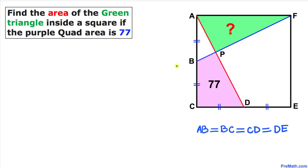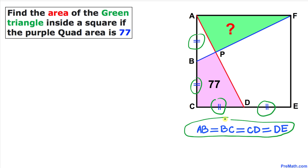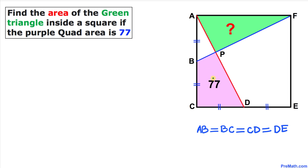Welcome to Pre-Math. In this video tutorial we have square ACEF such that line segments AB, BC, CD, and DE are equal in length. Moreover, the area of this purple quadrilateral has been given to us as 77, as you can see in the figure. Now we are going to calculate the area of this green triangle.